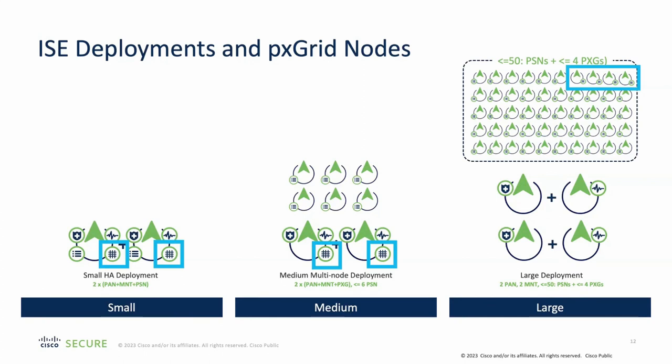In each deployment, we can support up to a certain number of PXGrid nodes, highlighted in blue. One important thing about PXGrid version 2.0 is that all the nodes are active. Some customers get confused when executing 'show application status ise' in CLI and it shows PXGrid service as standby — that refers to the previous version. With PXGrid version 2, all PXGrid nodes are active and can serve an equal amount of services.